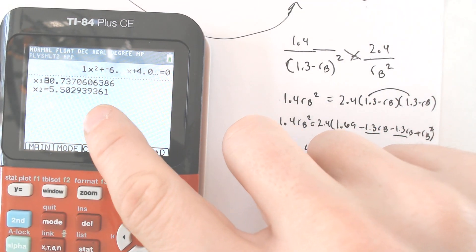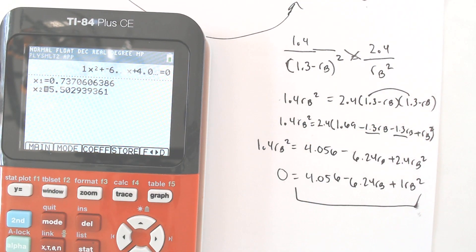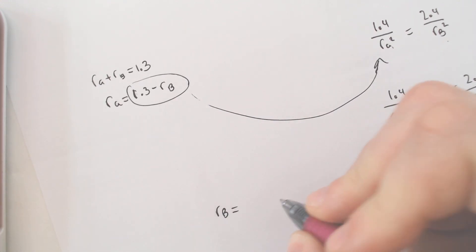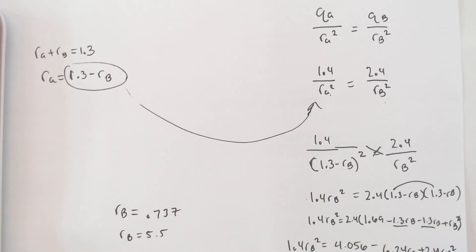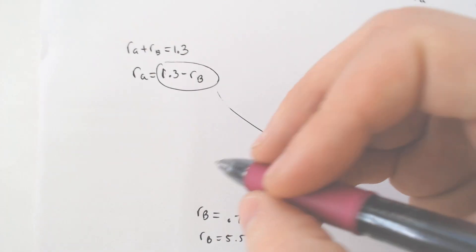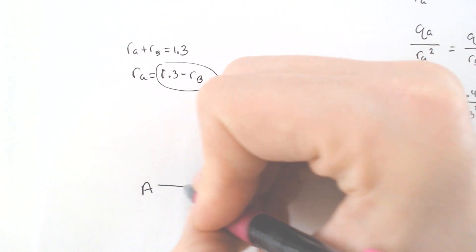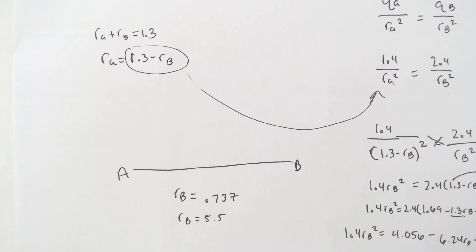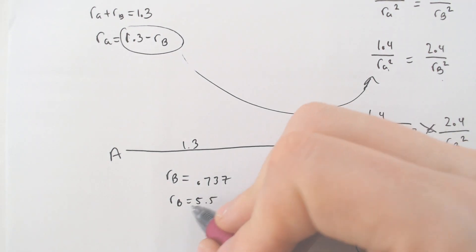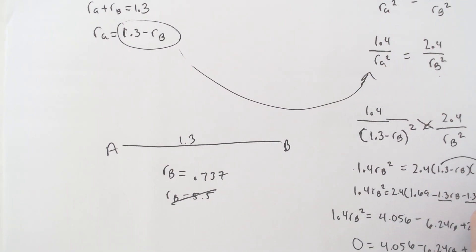And it would tell me that I have two values, one of which is 0.737 and the other one is 5.5. And only one of them can work. So in my calculator, I got radius for B is equal to 0.737 and radius for B is equal to 5.5. Now, knowing that our entire length of the line was 1.3 from A to B, I can't have the radius of B be 5.5. That wouldn't make any sense. So the radius must be the 0.737.